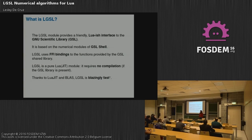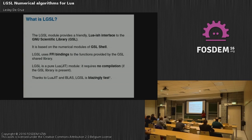So what is LGSL exactly? It provides a very friendly and intuitive interface on top of the GNU Scientific Library, based on the numerical modules of GSL Shell. It uses FFI — the foreign function interface — bindings to functions from the GSL library, so you do not have to compile anything. It links directly to the shared library of GSL. We want this to be a real alternative to writing C applications, so performance really matters. LuaJIT is one of the fastest dynamic language implementations, and thanks to custom BLAS support, LGSL is blazingly fast.